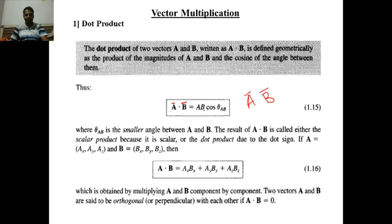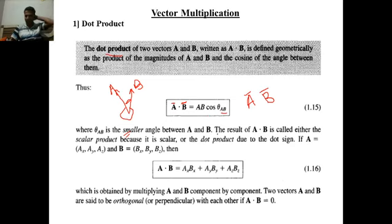So A bar dot B bar is equal to A into B cosine of the angle between A bar and B bar. Theta AB is nothing but the smaller angle — it is very important. It is the smaller angle between A bar and B bar. For example if A bar is in one direction and B bar is in another, then we take the smaller angle between them to compute the dot product. Also, dot product of these two vectors always gives a scalar, not a vector. So you will get a magnitude but no direction.